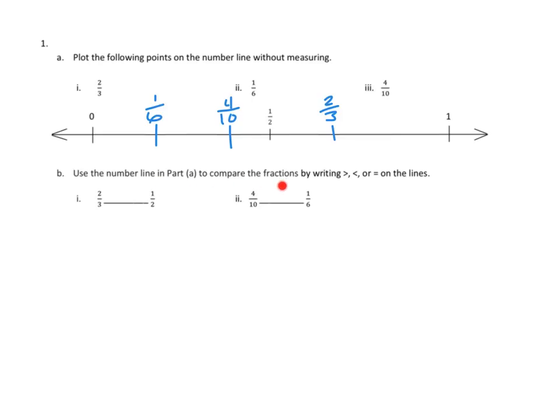Use the number line in part A to compare the fractions by writing greater than, less than, or equal to on the lines. Two-thirds and one-half: two-thirds looks like it's bigger than one-half, so we will draw a greater-than symbol. Let's look at the second one, four-tenths and one-sixth. Looks to me like four-tenths is larger than one-sixth, so I'm going to do a greater-than there as well. I think that's what our number line tells us. Sound good?